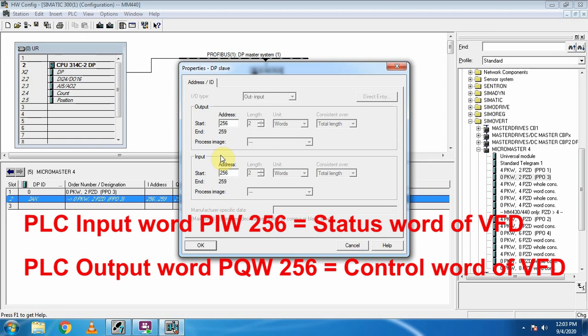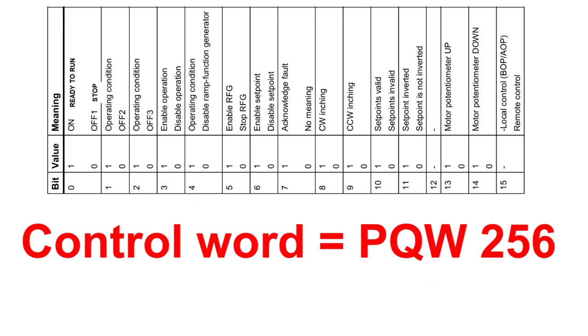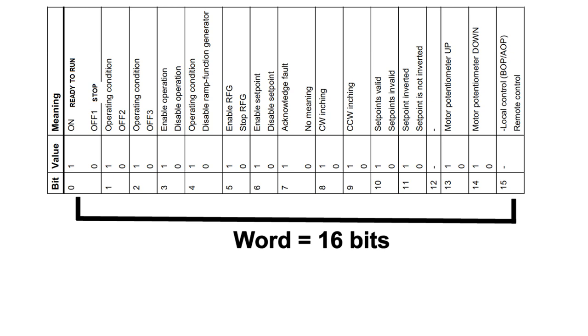This system uses two input words and two output words. We call the input words the status word of the VFD, and the output words will be the control word. The two input words of the PLC will be linked to the status word of the VFD via Profibus, and the output word of the PLC — address 256 — will be linked to the control word of the VFD. The control word of the VFD consists of 16 bits.